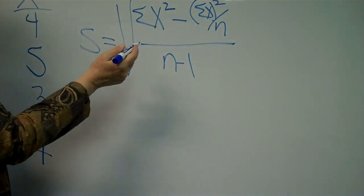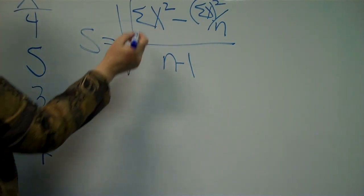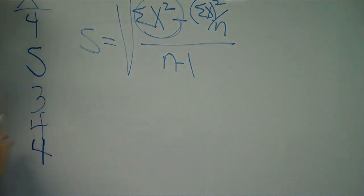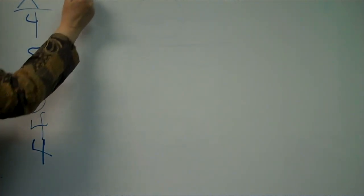So the only thing that we have to calculate that we didn't need for the mean is this term, the sum of all of the X squareds. I have our data. I have my data squared.